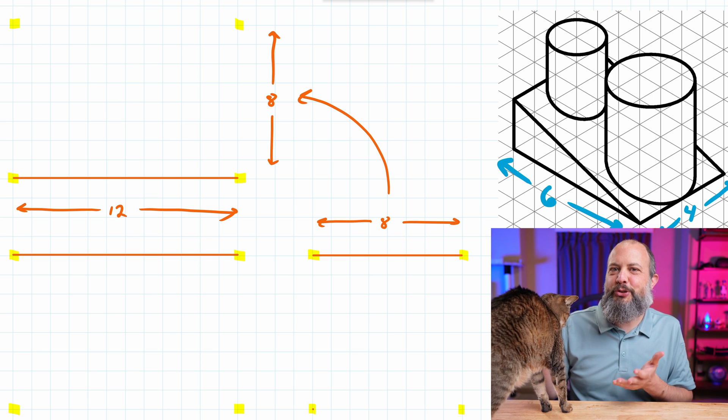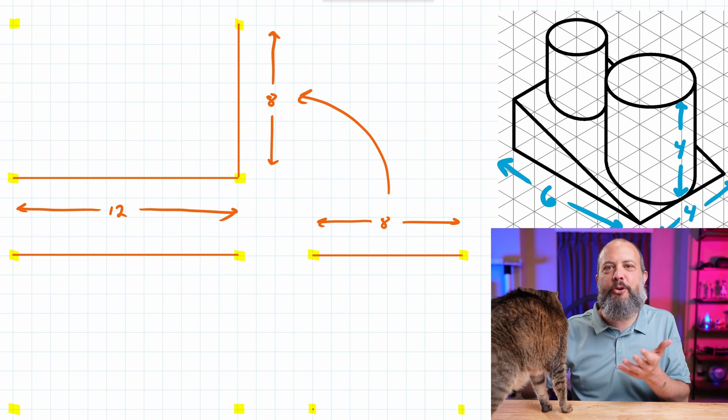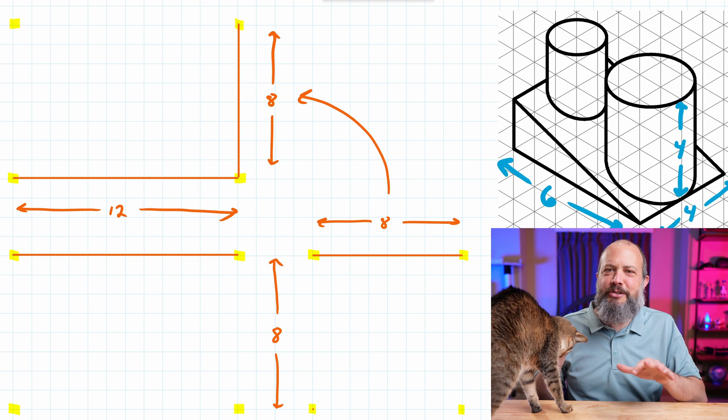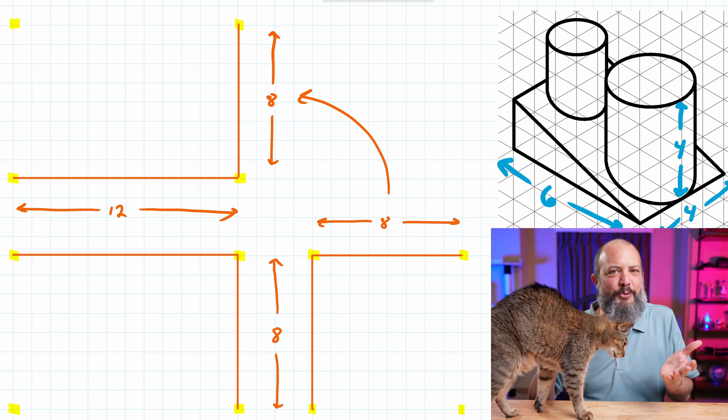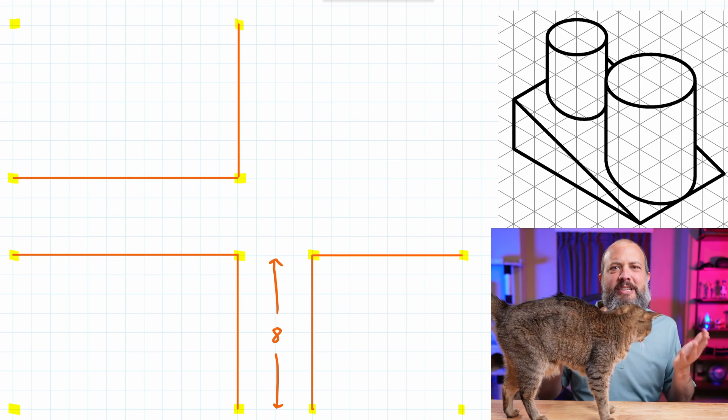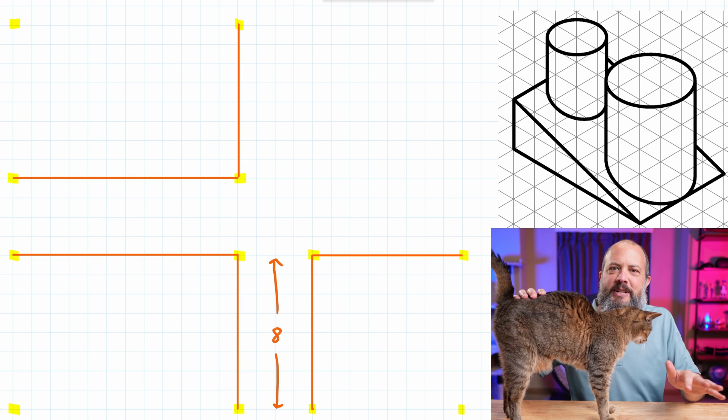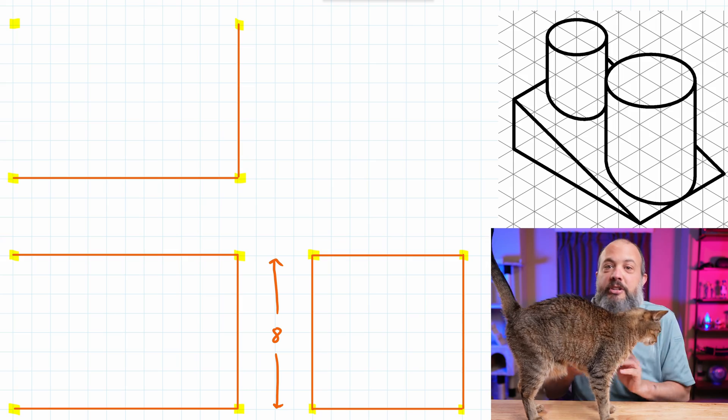This isometric drawing is only six squares wide by four squares deep into the page and four squares tall. Since the squares on my graph paper are actually much smaller than this, if I didn't scale the drawing, my drawing would be really tiny. So all of the measurements that I take on the isometric view, I'm going to multiply all of those by two. So I'm using a scale of two to one.